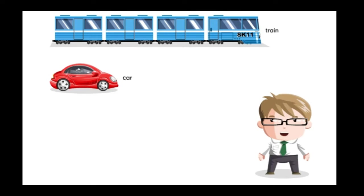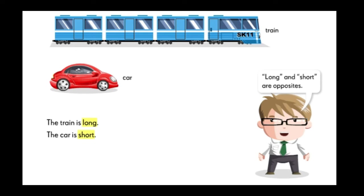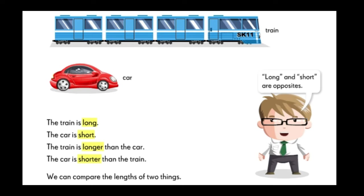Next, let's look at these two objects. The train is long. The car is short. Long and short are opposite. We said that the train is longer than the car. We can also say that the car is shorter than the train. Now we can compare the length of two things.